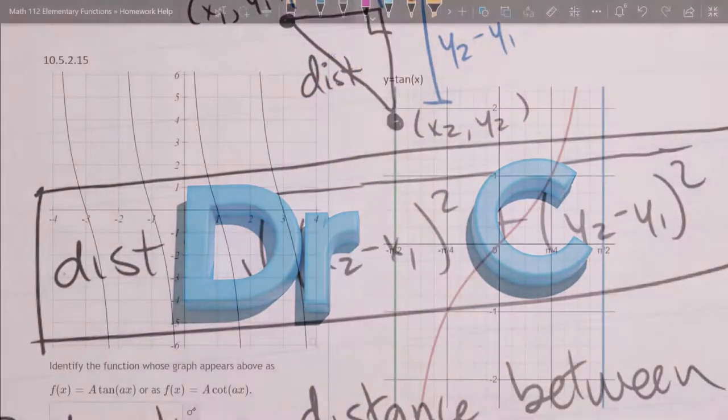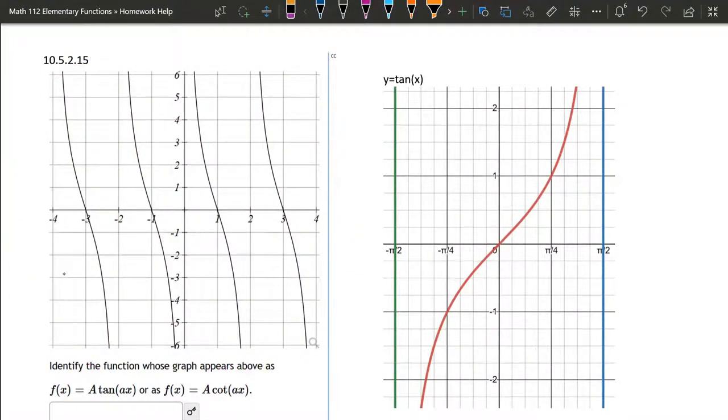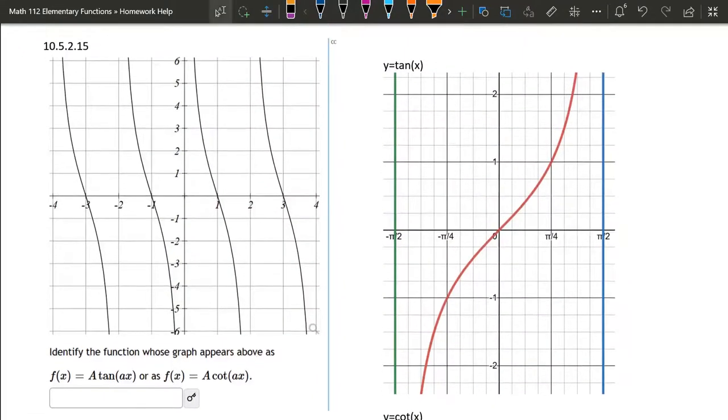Question 15. We're given a graph over here and we have to decide, is it tangent or cotangent? And I have the tangent and the cotangent graph here. And then we have to decide the vertical stretch and the horizontal stretch.